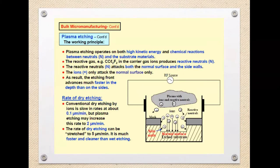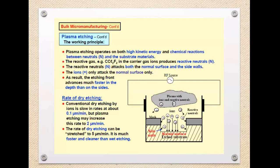The neutrals bombard the target on both the side walls and the normal surface. The charged ions bombard only the normal substrate surface. Etching of the substrate material occurs due to high energy ions bombarding the substrate surface simultaneously with a chemical reaction between reactive neutrals and the substrate material.